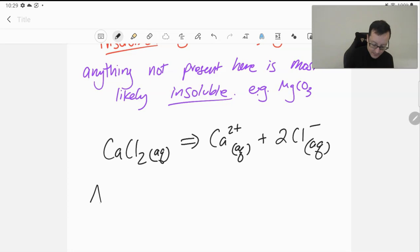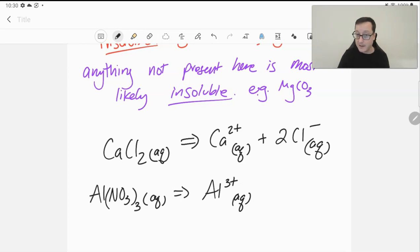If we have something like aluminum nitrate, that's going to break into the aluminum ion. This should be soluble, by the way, because it has a nitrate in it. And we have three nitrate ions here. So we'll expect all of these to form nice solutions, where we're going to have nice electrolytes. These are all soluble.